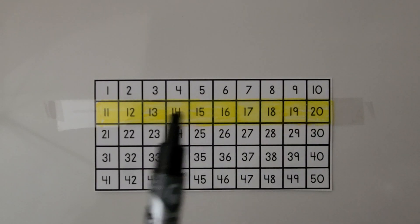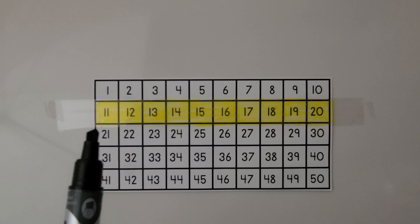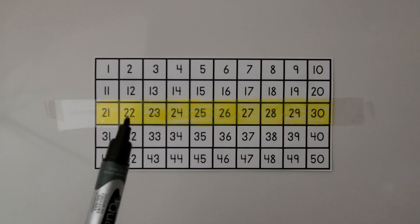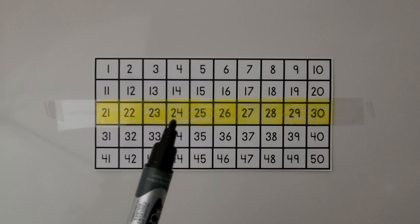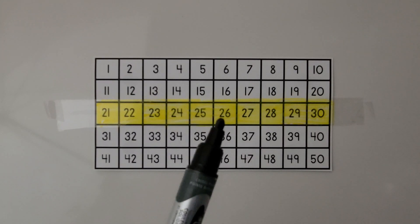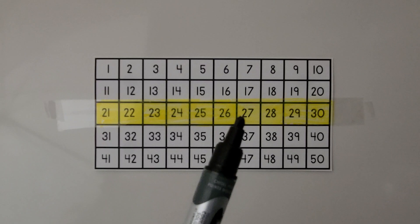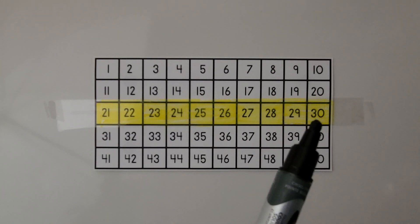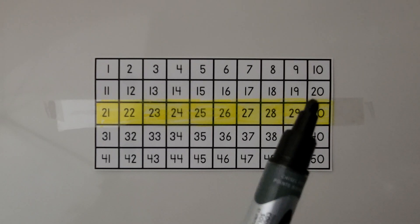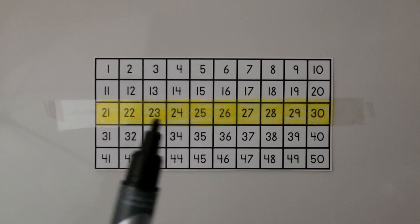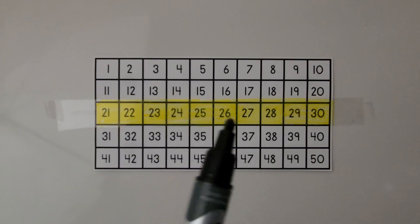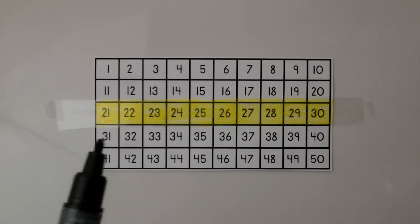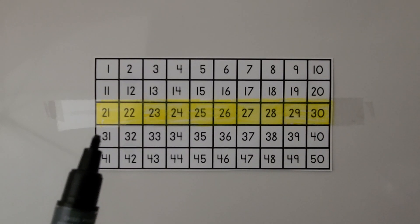Now we go to the next row below and start counting: 21, 22, 23, 24, 25, 26, 27, 28, 29, 30. We read the numbers that begin with a 2 as 20, followed by that number. We read the numbers that begin with a 3 as 30, followed by that number.